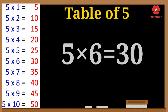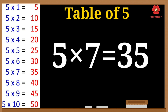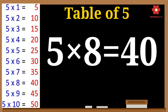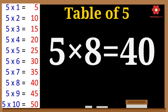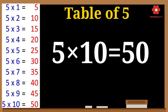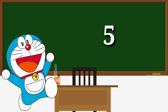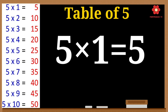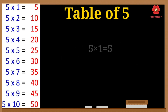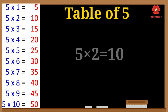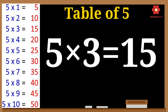5 7s are 35. 5 8s are 40. 5 9s are 45. 5 10s are 50. 5 1s are 5. 5 2s are 10. 5 3s are 15.